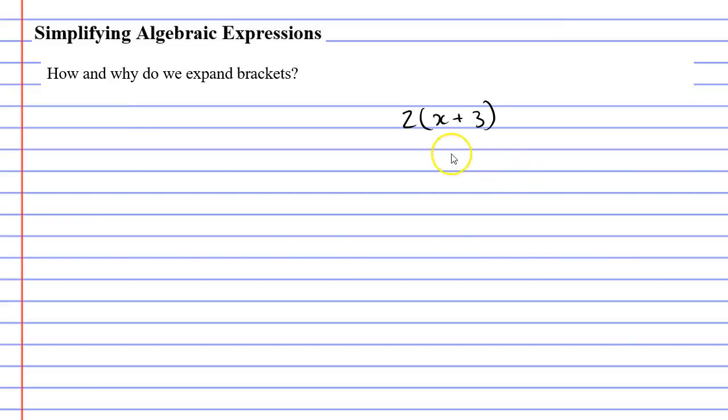If we were to expand this expression, 2(x + 3), normally we would connect the 2 to each term inside the brackets using a little red arc, and then we would multiply them. We would go 2 times x, and then we would go 2 times 3.